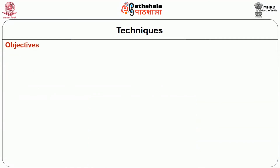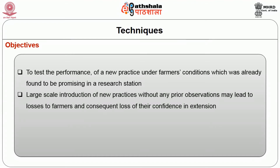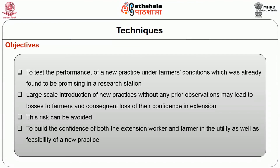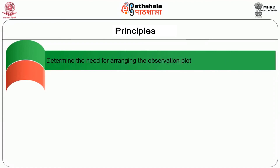The objectives of observation plots are: to test the performance of a new practice under farmers' conditions that was already found promising at a research station; to avoid losses to farmers that could result from large-scale introduction of new practices without prior observations; and to build the confidence of both the extension worker and farmers in the utility and feasibility of a new practice.